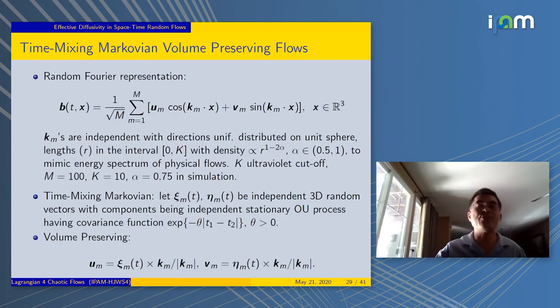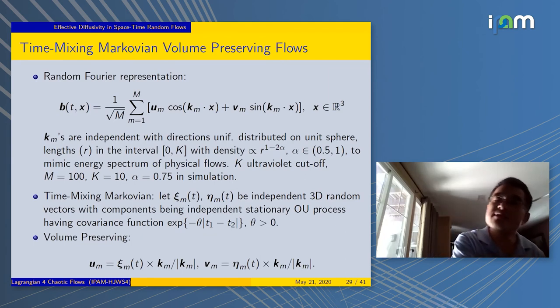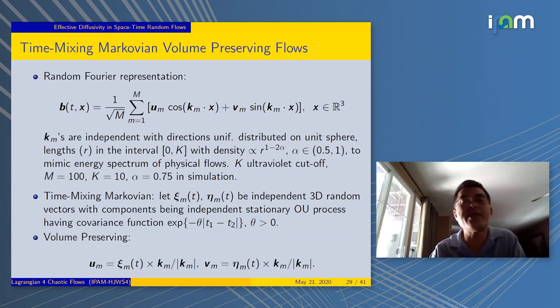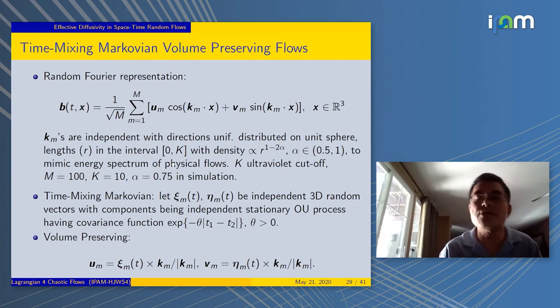How do you do it computationally? In space, we're going to use a random Fourier series to generate this function. It's cosine. You set that this wave number k_m has to follow certain independent distribution. The direction of these vectors are uniformly distributed on the unit sphere. The magnitude follows some power law that decays slowly. This is just to mimic the energy spectrum of physical flows with certain cutoff.